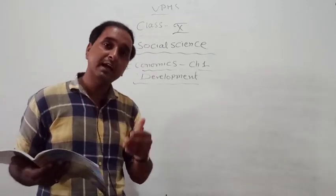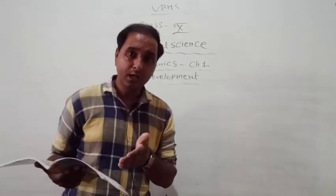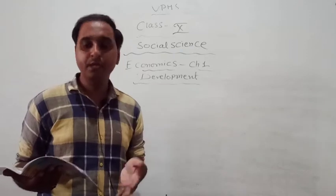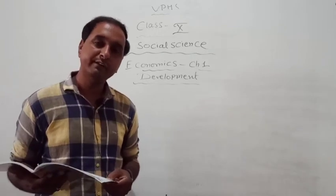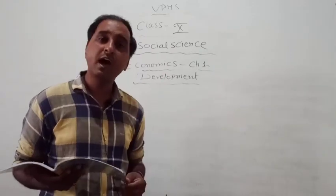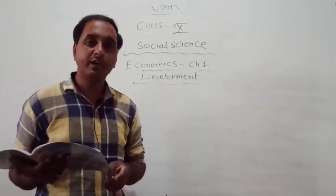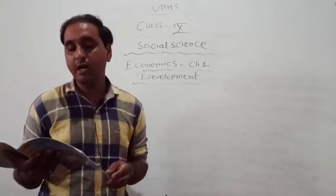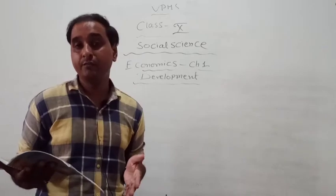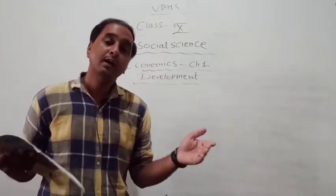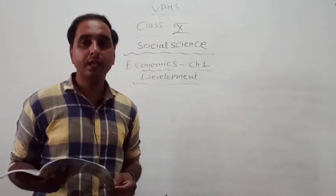The income of the country is the income of all residents of the country. However, comparing total income of countries is not very useful because countries have different populations. Therefore, we use per capita income — the total income divided by the total population — for comparison. Although per capita income is not a perfectly strong basis for comparison, it is very widely used.